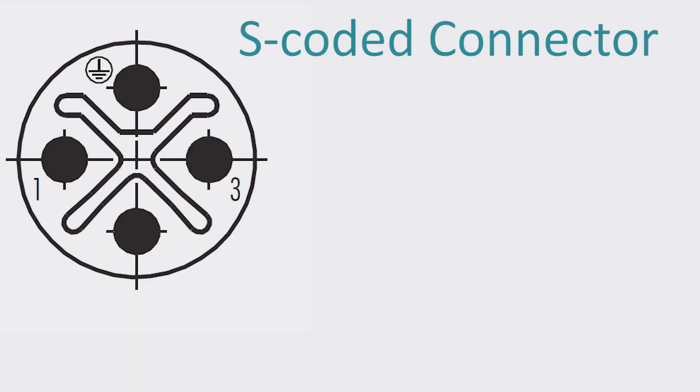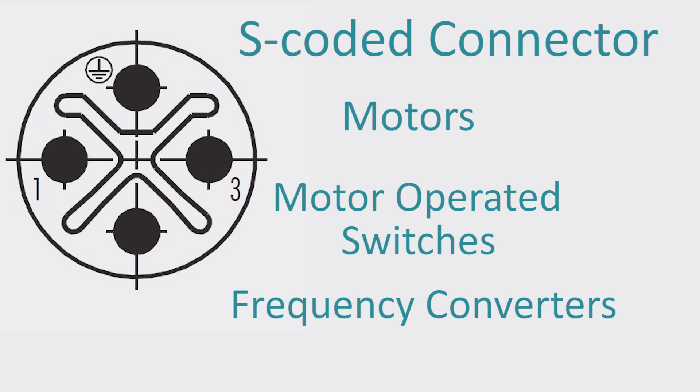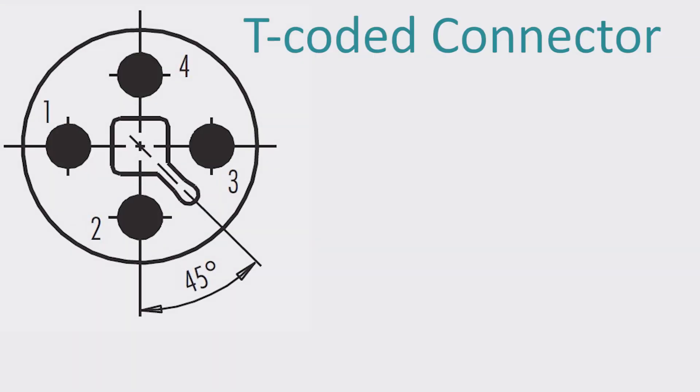The S-coded connector is most heavily used in motors, motor-operated switches, and frequency converters, while the T-coded connectors are implemented in field bus connections and passive distribution boxes.